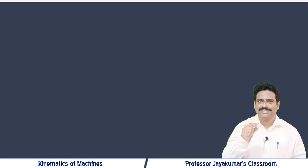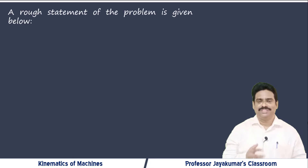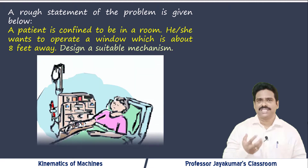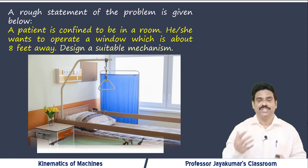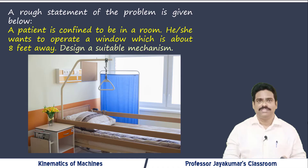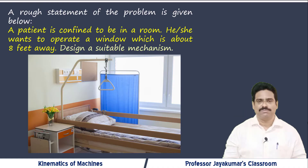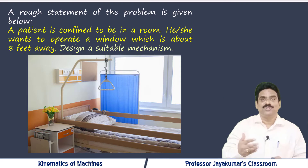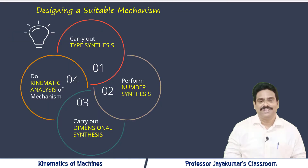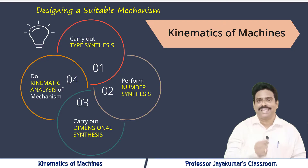To view the scope of this course in a nutshell, let me present you a rough statement of the problem. It says that a patient is confined to be in a room where the patient's mobility is restrained — he or she is bed-ridden — but the patient wants to operate a window which is about six or eight feet away on his or her own. As a mechanical engineer, we are required to design a suitable mechanism which will transmit and transform the input motion given by the patient into a suitable output motion, which is nothing but opening or closing of the window. The answer to this design of mechanism is what we will be doing in this Kinematics of Machines course.